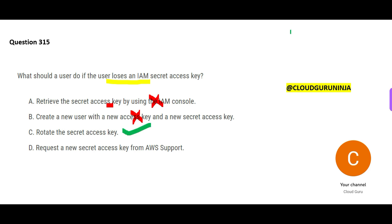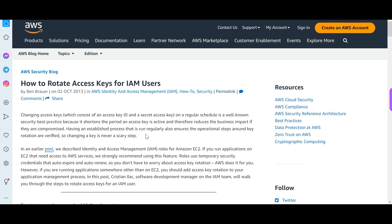Option D says we will get a new key from AWS Support, but AWS Support has nothing to do with these small trivial problems — they will tell you to rotate the secret key yourself. It's like going to the builder of your apartment 10 years after handover asking for a new key; they are already developing new projects and won't help you. So option C — rotate the secret access key — is the final answer.